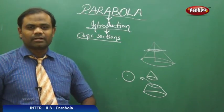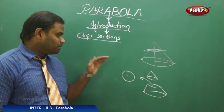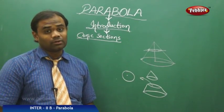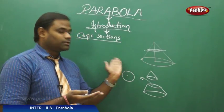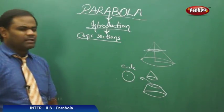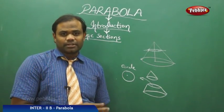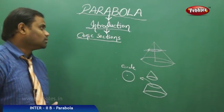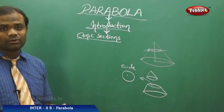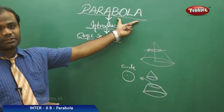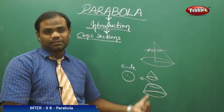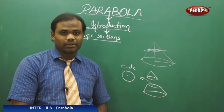A circle is obtained through the perpendicular cutting of a cone through the base — that is the conic section where the cone is perpendicularly cut, and it gives a circle. Similarly, we have another type of conic section through which we get a parabola. Let's see what angle of cutting gives a parabola.